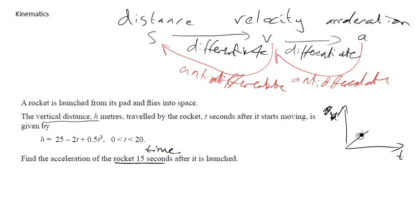So I've got dH/dt is -2 + 1.5t². Remember, I'm still using multiply by the power, take one away from the power. So that is my velocity.